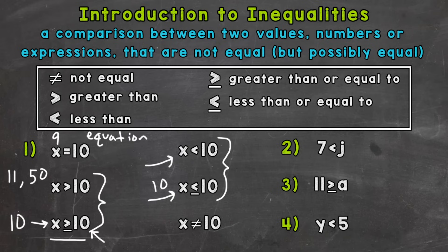Lastly, we have x is not equal to 10. So any value that's not 10 would be correct — 8, 9, negative 20, whatever the case may be. The only incorrect solution would be if we were to put 10 in there. Is 10 not equal to 10? No, that doesn't make sense. So any value other than 10 would work for that last inequality.